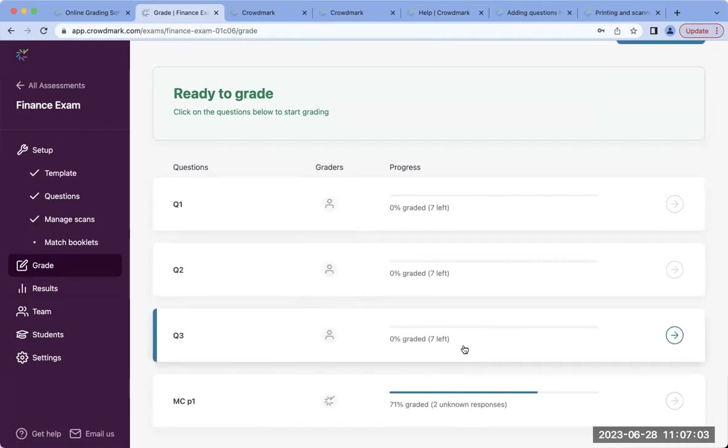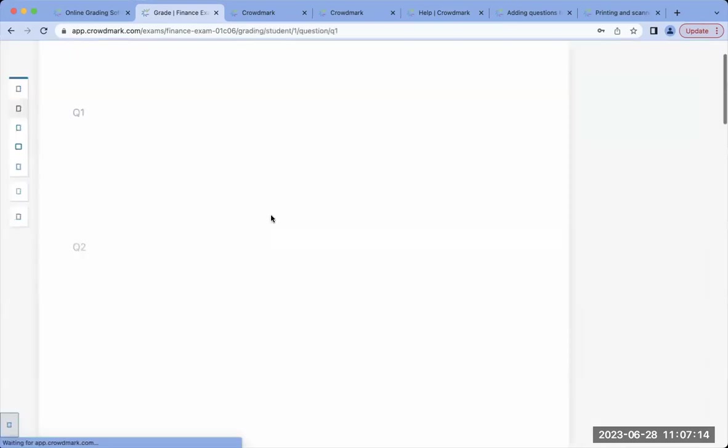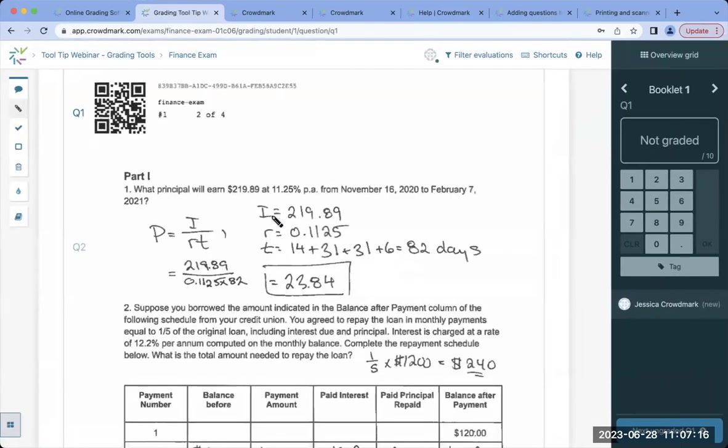The reason students' work is divided by questions is because we have found it to be much faster to grade this way. To begin grading, you simply want to just go ahead and click into a question. You'll notice as soon as you've landed on a student's assessment or work, there are a number of tools that you can use to leave feedback, which differ based on the different question types or responses that you are working with.